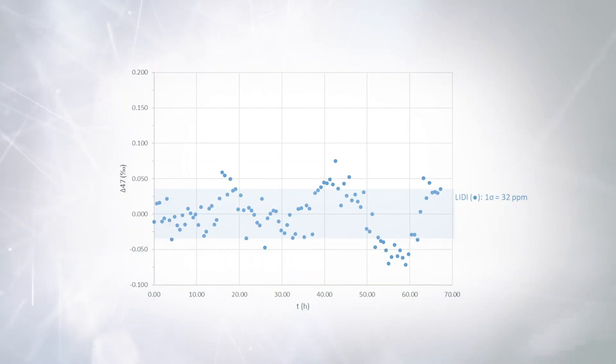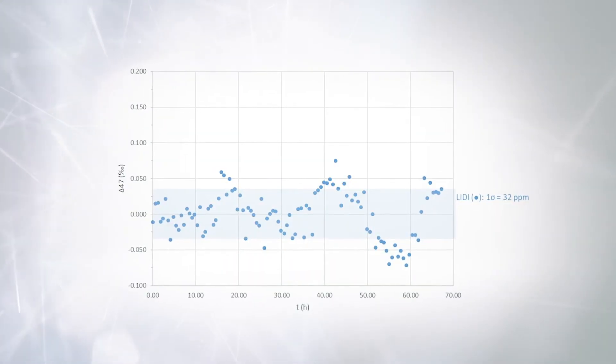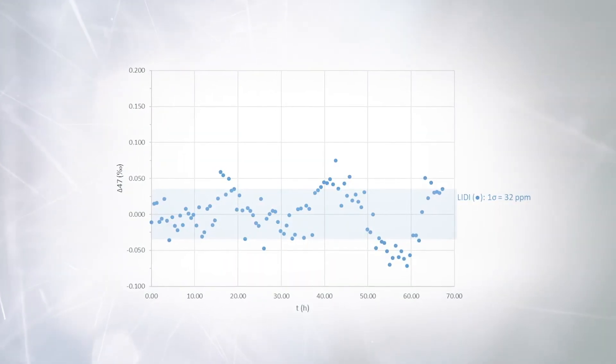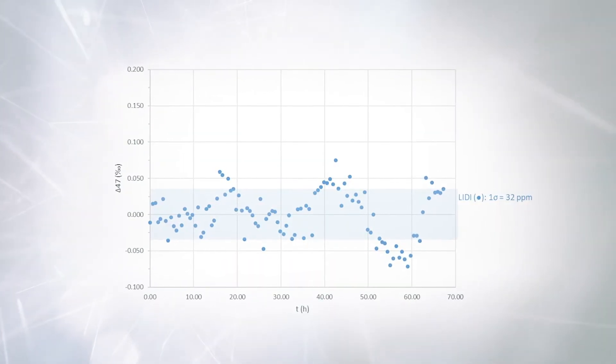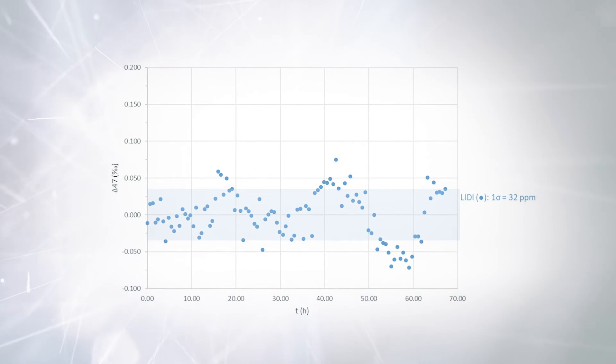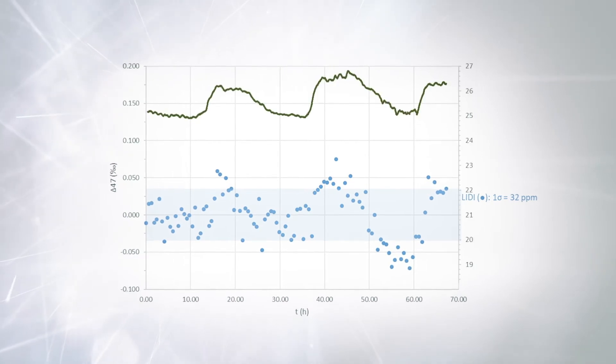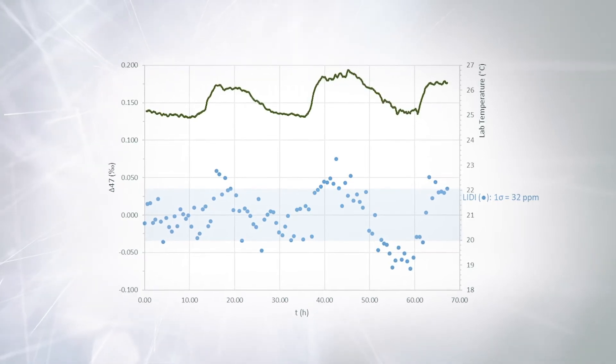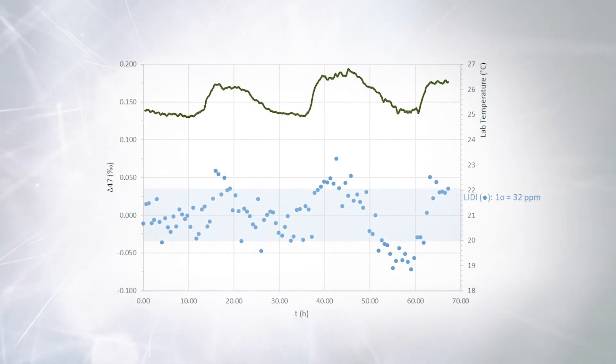Systematic drift caused by lab temperature instability can be fully removed from the data. In this figure, a drift is visible in the original data depicted in blue, correlating with laboratory air temperature represented by a green line.